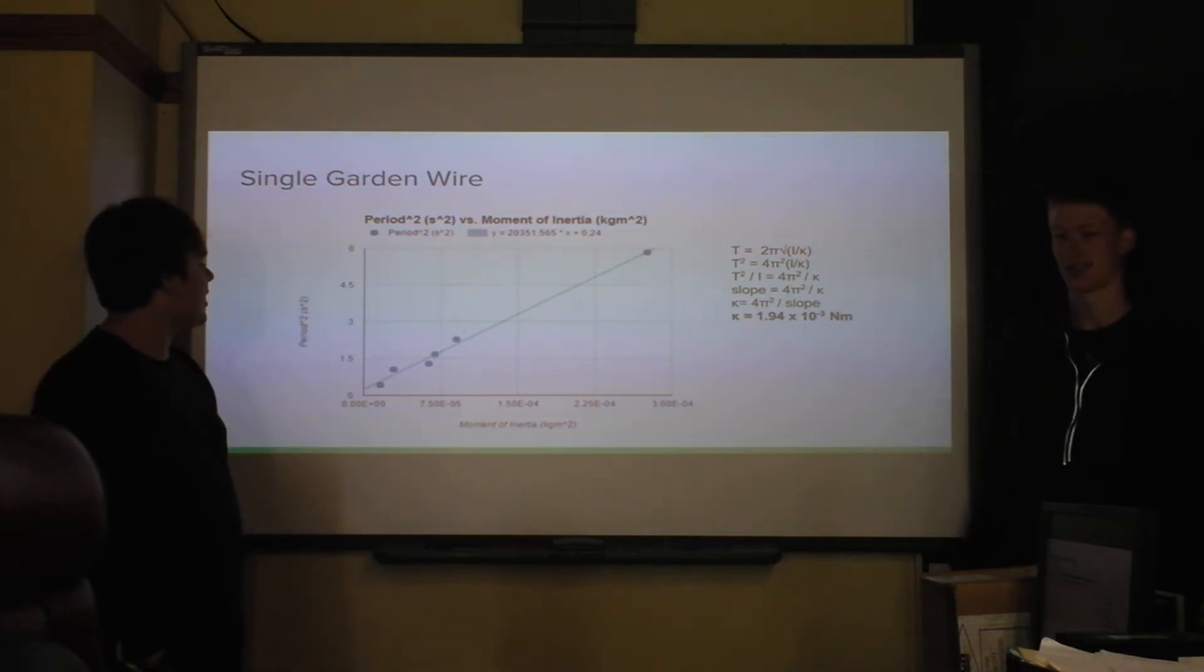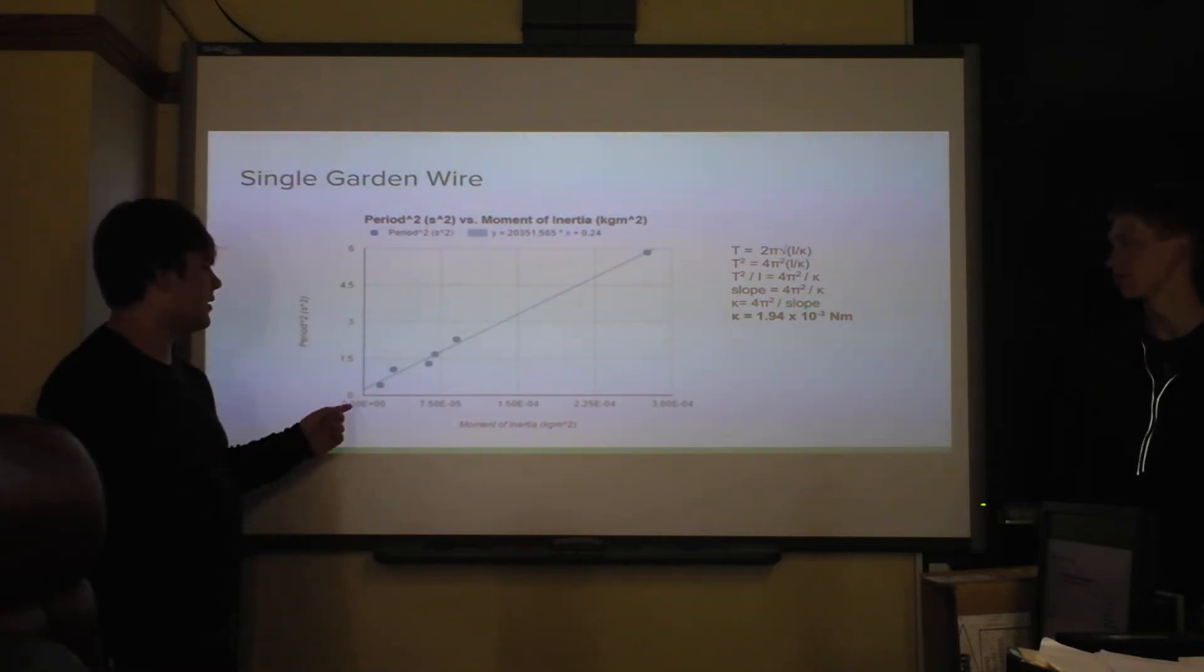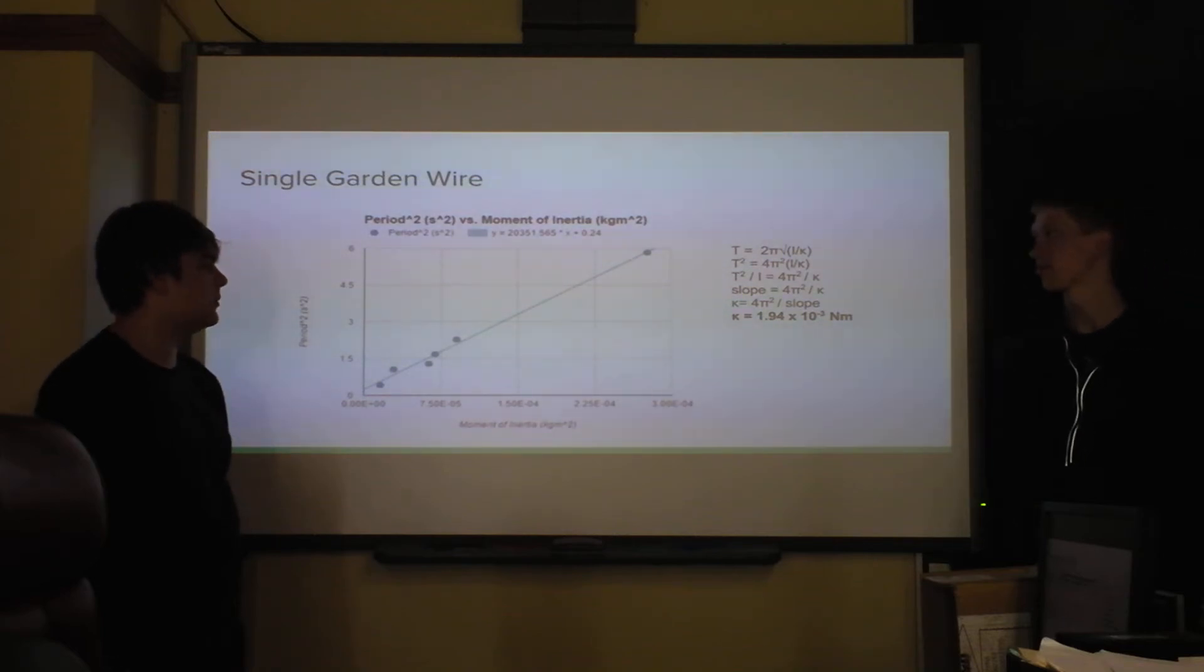So this is the graph for a single gardening wire. Since the equation was T equals 2π√(I/κ), we had to linearize the graph. To linearize the graph, we had to square the period. And so you can see it's pretty linear. And we calculated the torsion constant using the slope to be 1.94 × 10^-3 newton meters for the single gardening wire.